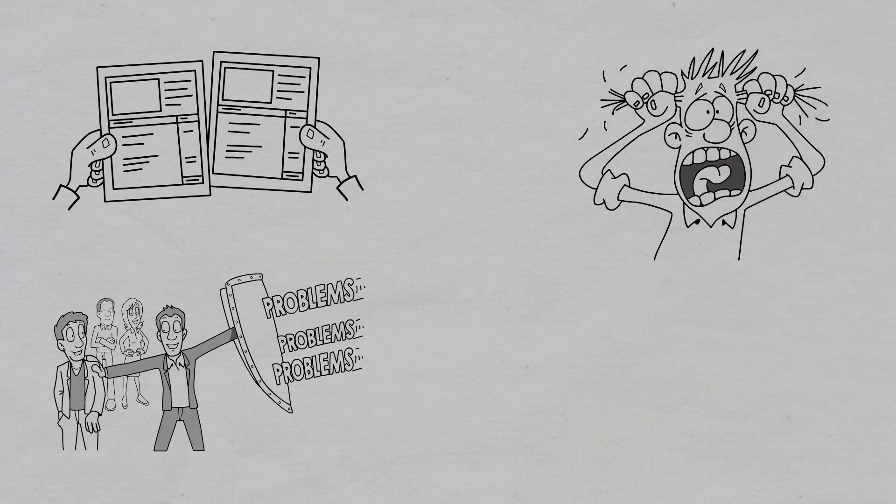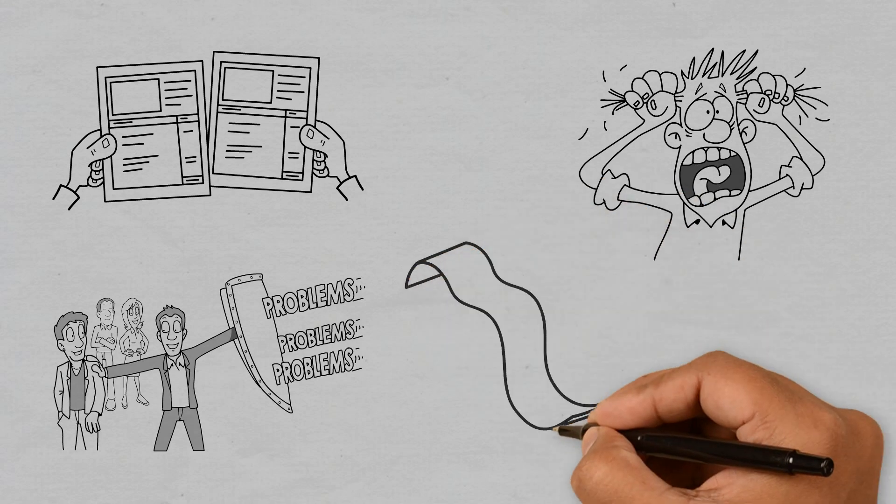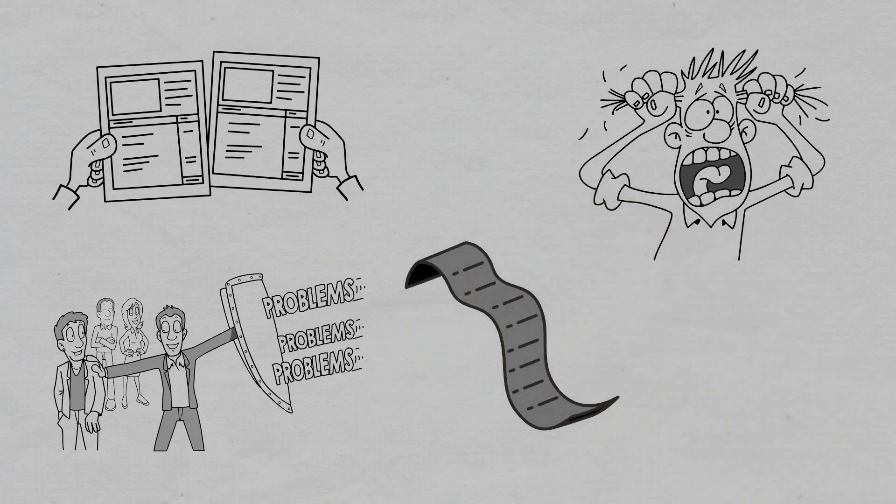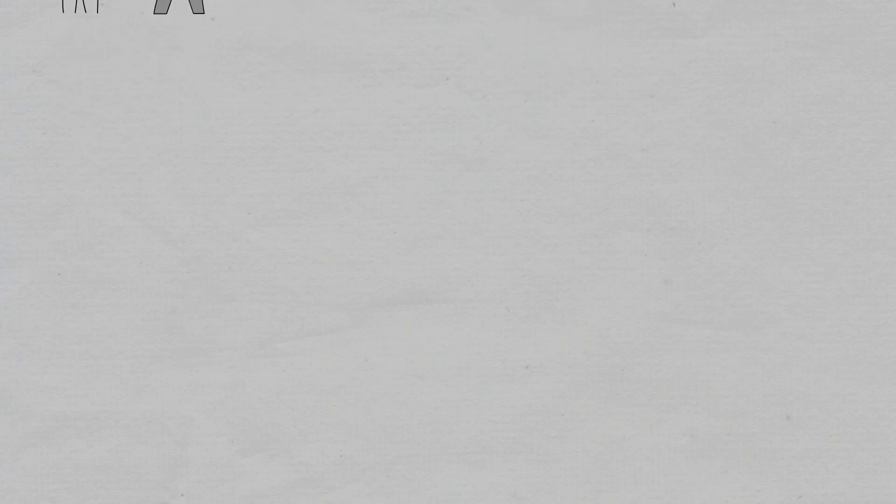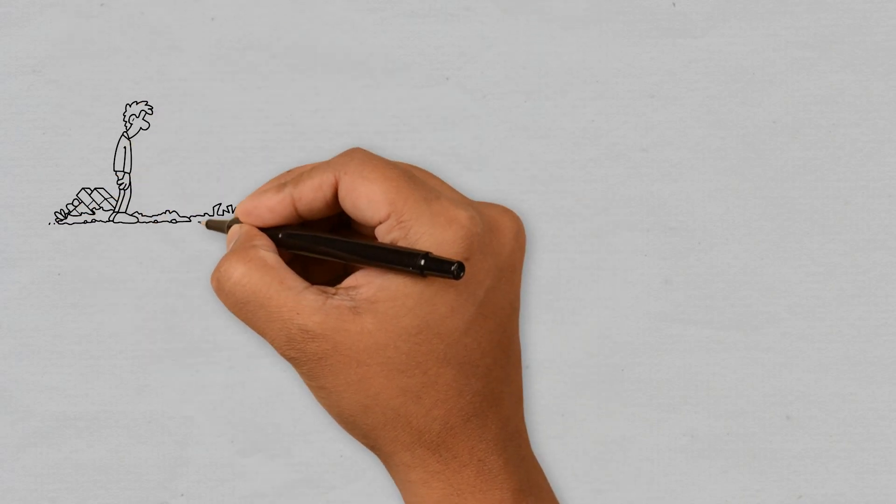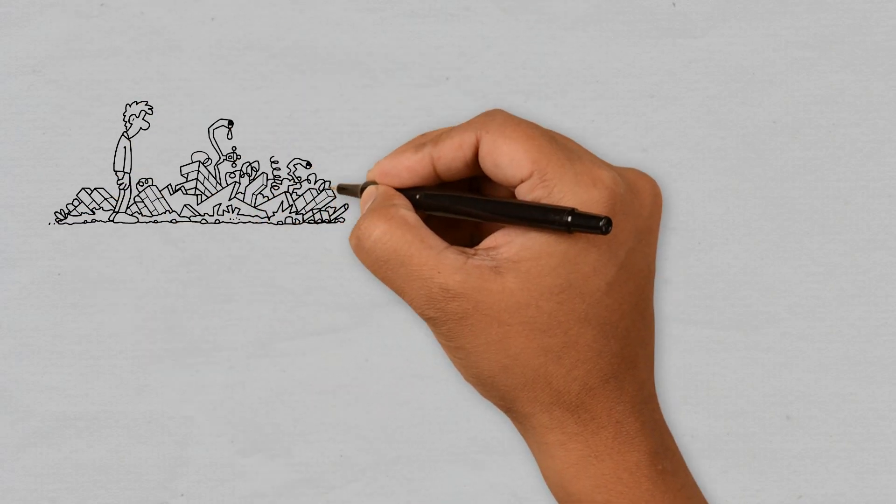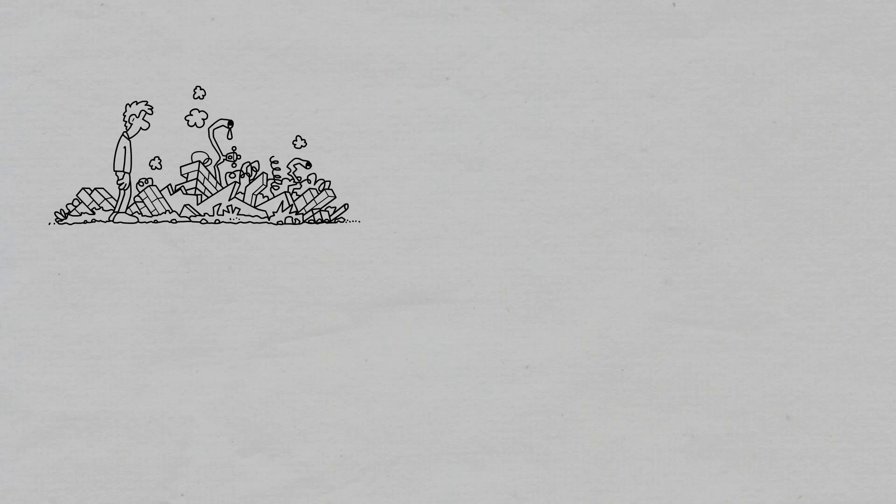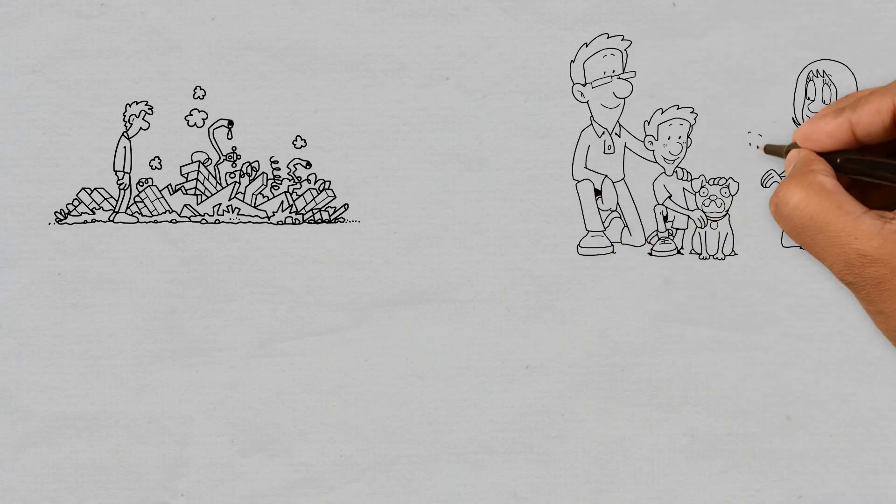For instance, without health insurance, a medical emergency could lead to exorbitant medical bills. Without property insurance, natural disasters or accidents could lead to financial ruin. And without life insurance, your loved ones may struggle to cover expenses in the event of your passing.